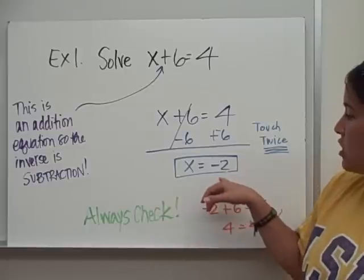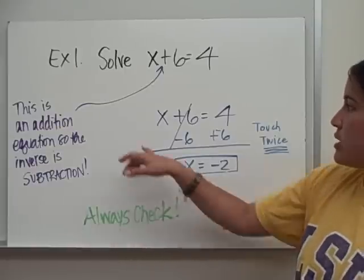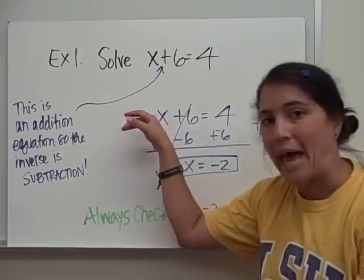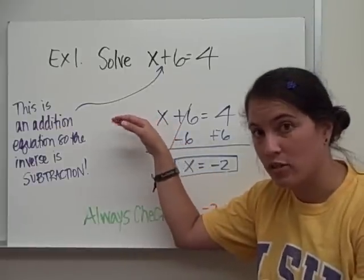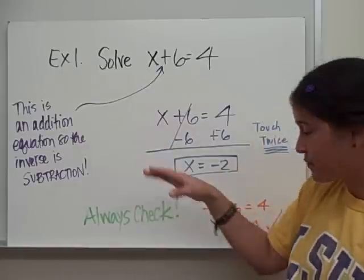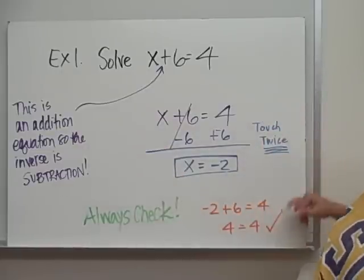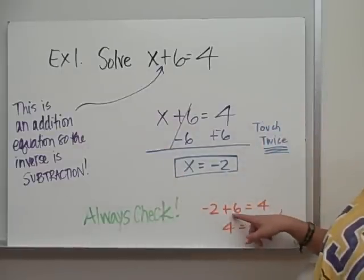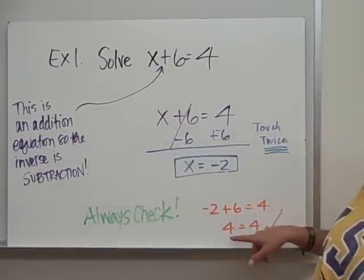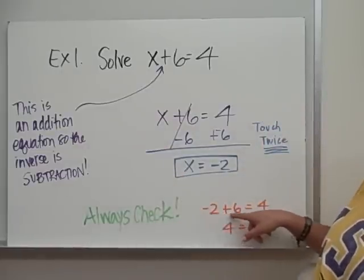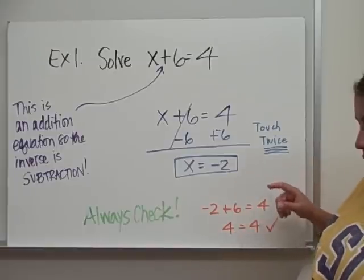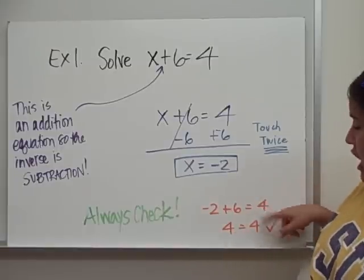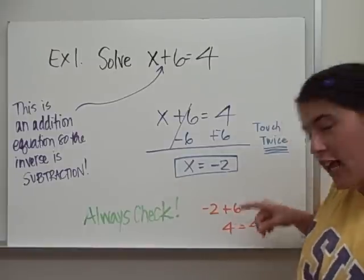We always want to check. So we take negative 2, substitute it back into x in the original equation. Negative 2 plus 6 equals 4, negative 2 plus 6 is 4, 4 equals 4 — and so it checks out.